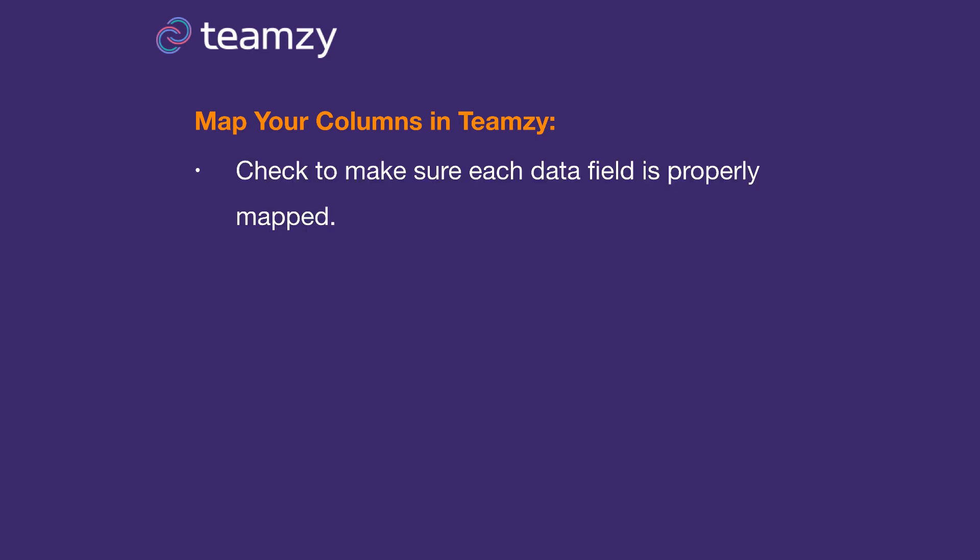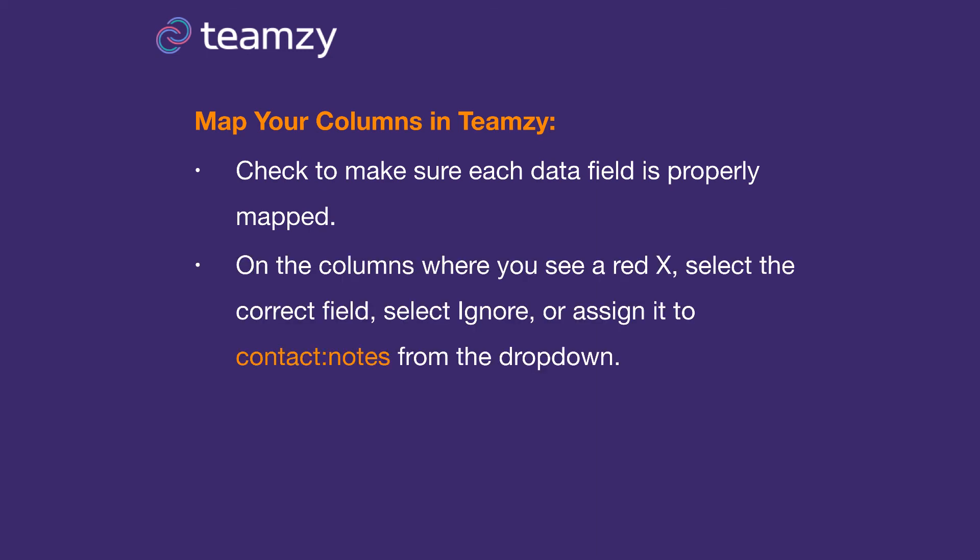They're going to show you a page where they're mapping your columns. Make sure each data field is properly mapped — first name goes to first name, last name goes to last name, email goes to email. Wherever you see a red X, you have a couple of choices: you can assign it to the correct field if it exists, ignore it if it's data you don't want, or assign it to Contact Notes from the drop-down. That's where you'll put all the data that doesn't have a field in Teamsy — it will be there every time you look at that person's contact. Click Continue, and that will bring your distributor list into Teamsy.